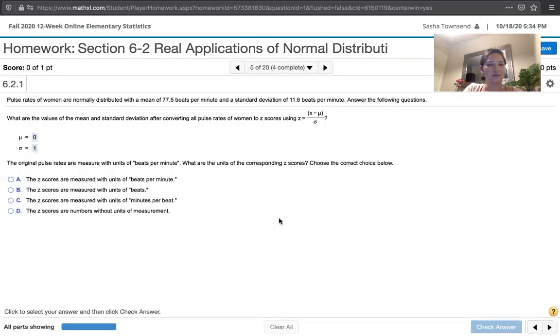Then the next part of the question says, the original pulse rates are measured with units of beats per minute. What are the units of the corresponding z-scores? Choose the correct answer below.